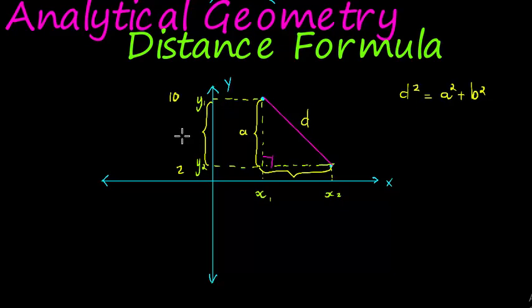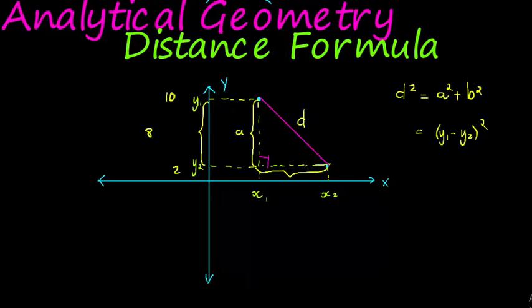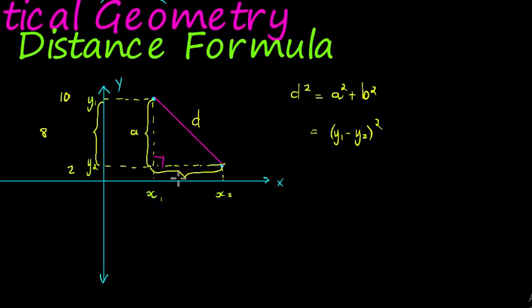What is this length? Well, let's say that was 10 and that was 2—this length would be 8, from 2 to 10. We can get the distance between two vertical or horizontal points by just subtracting their values. 10 minus 2 gives me 8. So the length of A would be Y1 minus Y2 squared. The length of B then will be similarly X2 minus X1 squared.